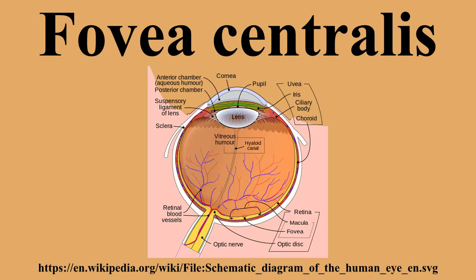The fovea has a high concentration of the yellow carotenoid pigments lutein and zeaxanthin. They are concentrated in the Henle fiber layer and to a lesser extent in the cones. They are believed to play a protective role against the effects of high intensities of blue light which can damage the sensitive cones. The pigments also enhance the acuity of the fovea by reducing the sensitivity to short wavelengths and counteracting the effect of chromatic aberration.